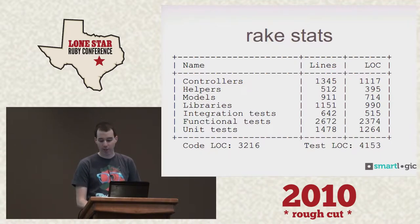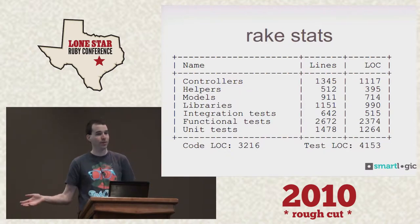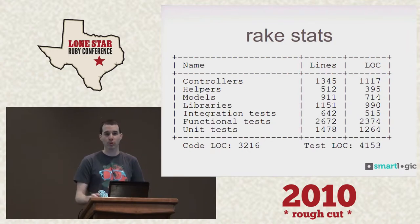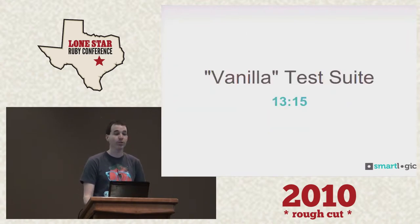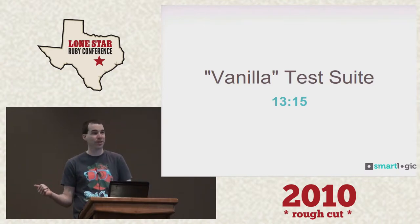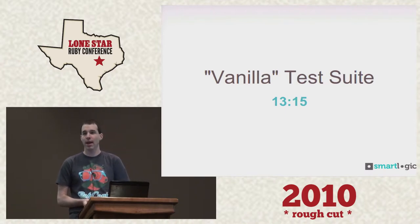Just to give you an idea: if you want to benchmark your own test suite and you had, say, 8,000 lines of code, you could look at mine, double it, and see about where I'm at versus where you're at. So, the vanilla test suite — this is before I really did anything to it, where we were saying maybe we should have a CI server. It was taking 13 minutes and 15 seconds.